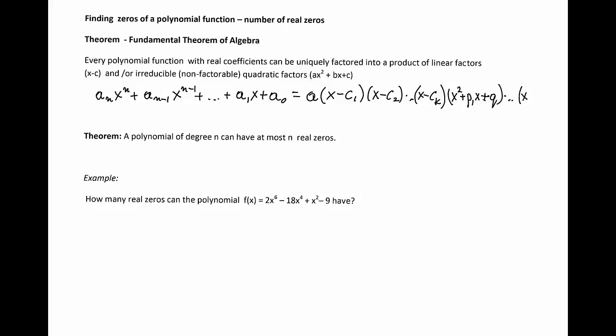X squared plus PMX plus QM. So in that factorization, there are going to be some linear factors, and there are going to be some quadratic factors that cannot be factored.